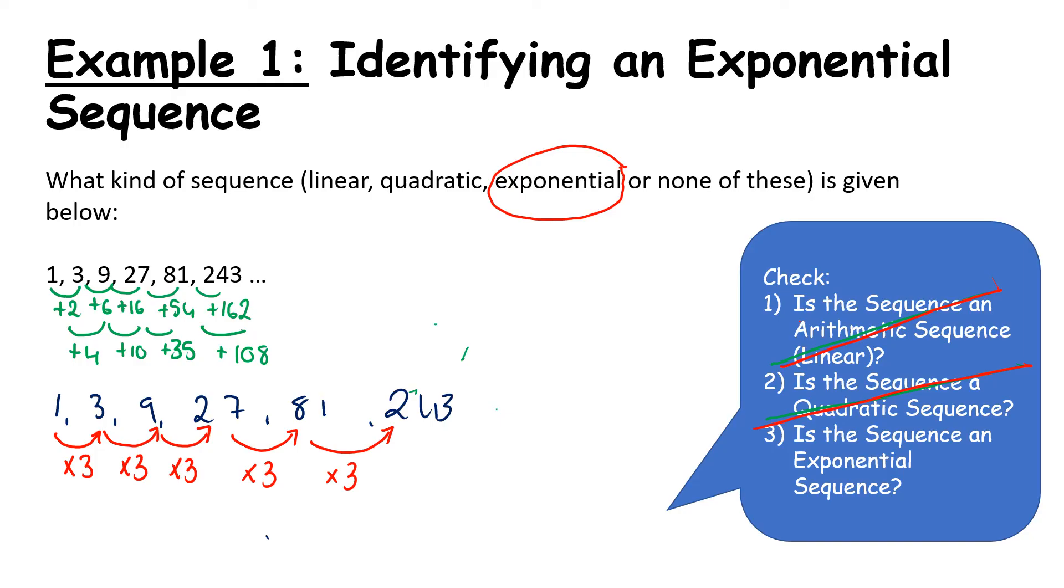In this case, if we wanted to talk about the general term of this, we would take this common ratio, which is 3. So Tn is equal to 3. But it's not to the power of n. And the reason it's not to the power of n is because that wouldn't work.